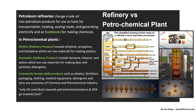In a refinery, we go through a lot of processing activities like distillation, cracking, reforming, blending, and treating, just to get the desired products. After getting through so many processes, these products come out of the refinery and are used as fuel in transportation, heating, paving roads, and generating electricity — these are the most obvious and common uses.